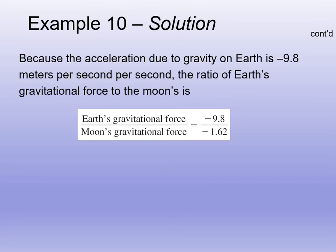Now we want to find the ratio of those two. We know here on Earth that gravity is 9.81 meters per second squared. So we can take the ratio here. It's negative 9.8, which is Earth's gravity, divided by negative 1.62, which is the moon's gravity. So when we calculate that out, the ratio is approximately 6, so 6 to 1.